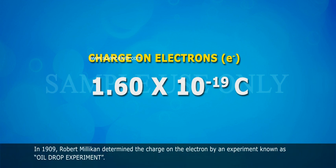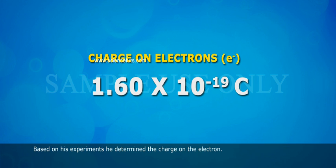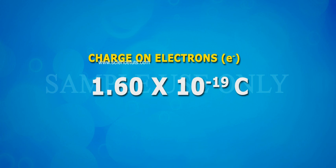In 1909, Robert Millikan determined the charge on the electron by an experiment known as the oil drop experiment. Based on his experiments, the charge on the electron is 1.60 × 10^-19 Coulombs.